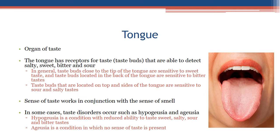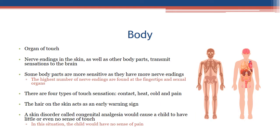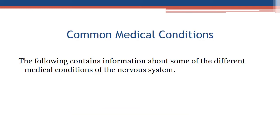Body — organ of touch: nerve endings in the skin and other body parts detect touch. Areas with more nerve endings are more sensitive; the highest number are found at the fingertips and sexual organs. There are four types of touch sensation: contact, heat, cold, and pain. The hair on skin acts as an early warning sign. A skin disorder called congenital analgesia causes a child to have little or no sense of touch or pain.